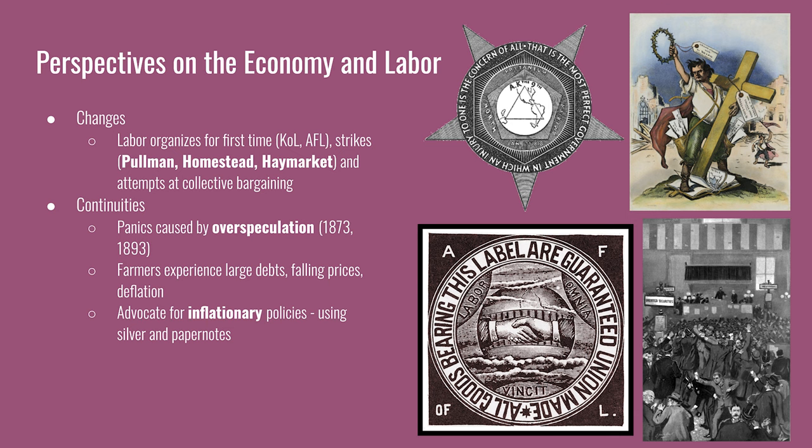For continuities, the economy still experiences financial panics, a lot of them caused by over-speculation. Earlier in the century they were caused by over-speculation in Western land, and that is still sometimes the case. Financial panics in this period are also caused by over-speculation in stocks of railroad companies. Farmers continue to experience large debts and are subject to low crop prices. They now advocate for an inflationary monetary policy — they want the use of greenbacks or the coinage of silver to make their debts less burdensome.